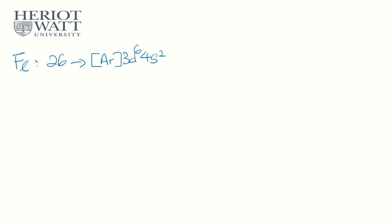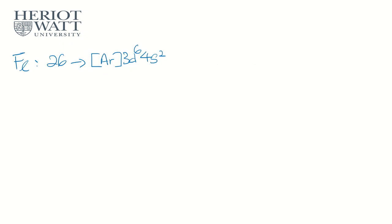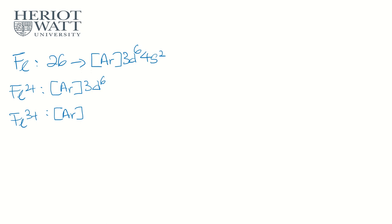However, d-block elements are not necessarily transition metals. The definition of a transition metal is one that can form at least one stable ion with incomplete d orbitals. Take iron as an example. The common ions are Fe2+ and Fe3+. Fe2+ has configuration [Ar] 3d6, and Fe3+ has [Ar] 3d5 — both have partially filled d orbitals, so iron qualifies as a transition metal.